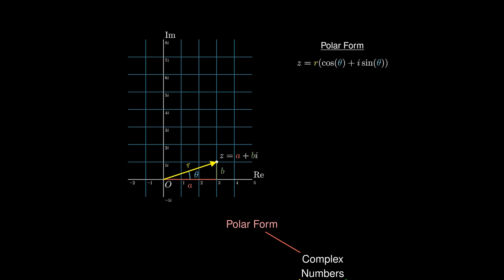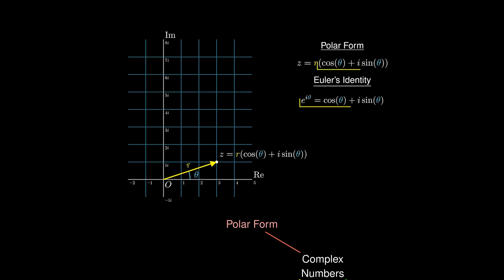We can use a little bit of calculus to obtain that e^(iθ) = cos(θ) + i·sin(θ). This allows us to write the complex number even more compactly as r·e^(iθ), known as the exponential form of a complex number.